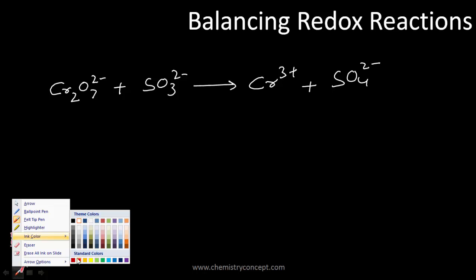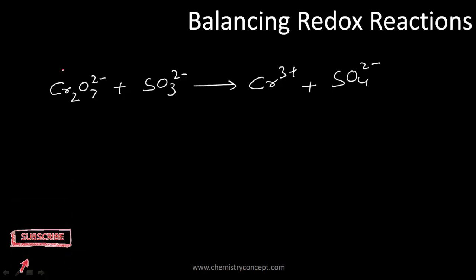The first step is to write down the oxidation number of everything. Chromium here is +6, and sulfur is in the +4 oxidation state on the reactant side. If you want to know how to find oxidation states, we have another video you can refer to.